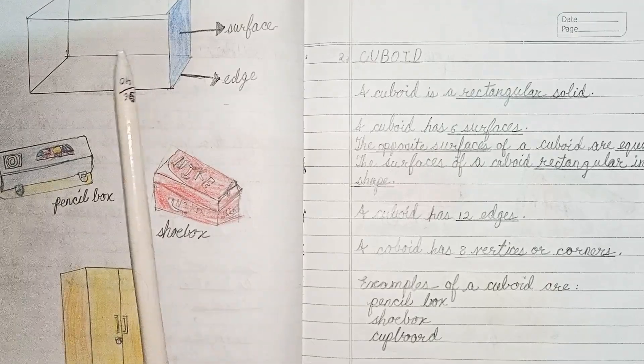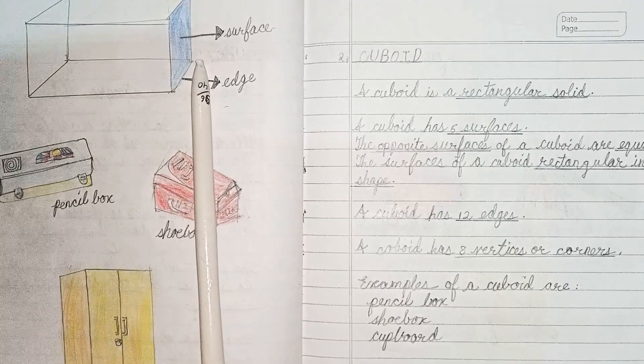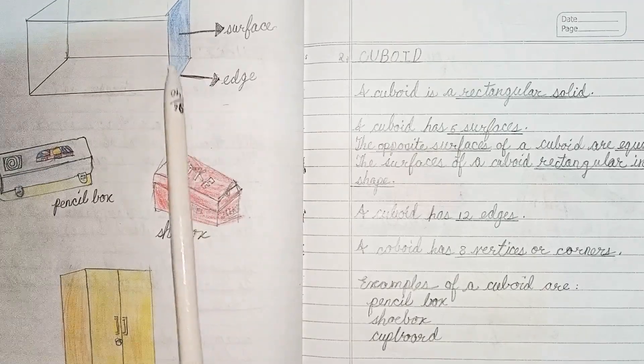Remember this: the surfaces of a cuboid are rectangular in shape. It has 12 edges and 8 vertices.